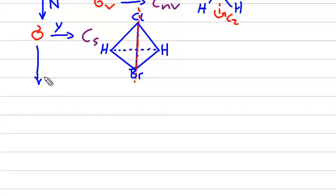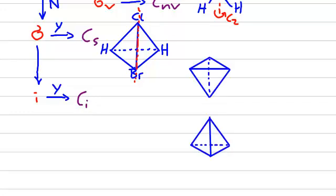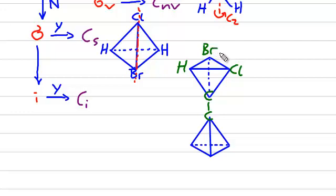If there is no reflection plane at all, let's investigate if there is an inversion center. If we have one, we call the point group CI. Here is our example structure — here we have the carbon atoms. Now we substitute some of the hydrogen atoms: this one we keep, but this one we substitute by a chlorine atom, and this one by a bromine atom. Down here we keep this hydrogen atom, and substitute this one down here by a bromine atom.